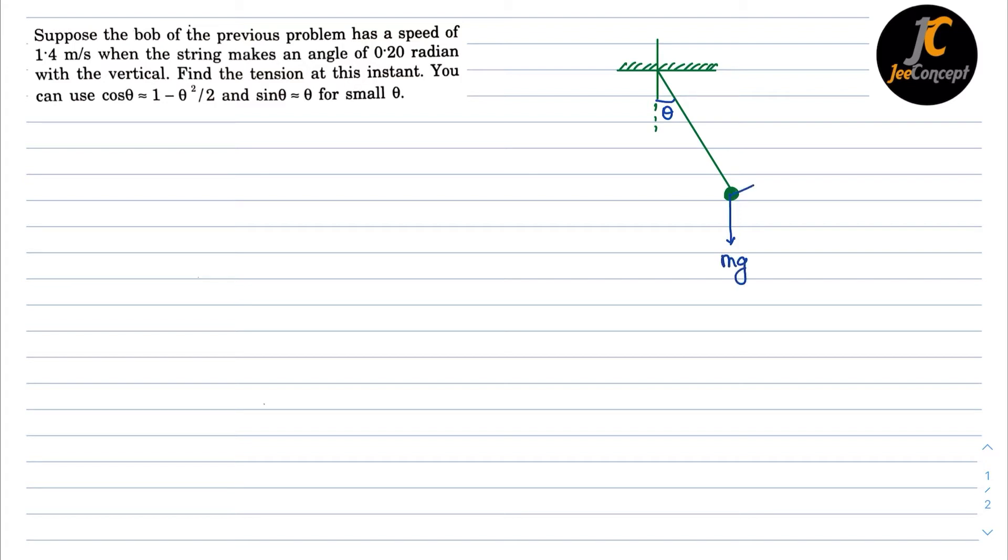The velocity is 1.4 meters per second. In that case, this angle will also be theta. So if this angle is theta, then there will be a component of this mg as mg cos theta, and there will be another component which is mg sin theta.